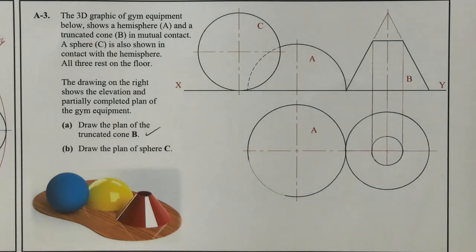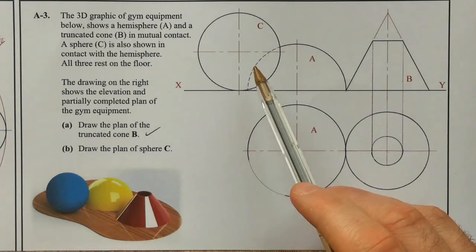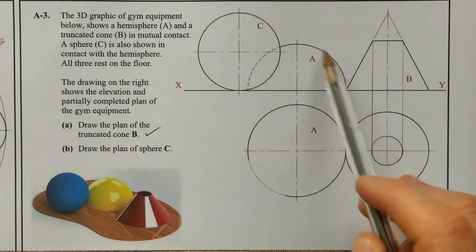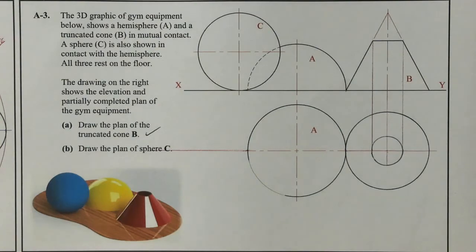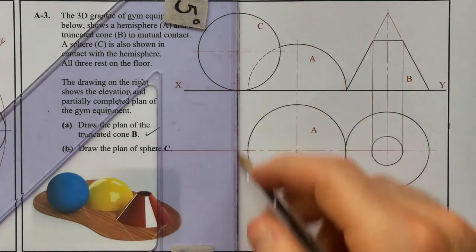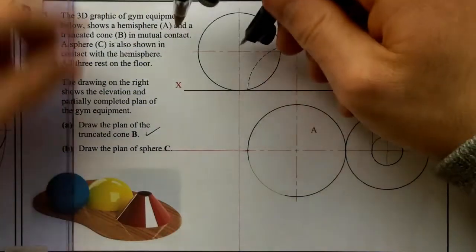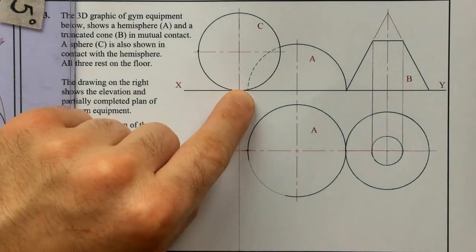Whenever you have a sphere in contact and it's in front in your elevation — slightly angled, not right on the edge — you have to locate sphere C at the position where it is touching on the extreme circumference of hemisphere A. I extend out the centre line and mark somewhere along there as the centre point of sphere C, then I need to find the exact position by taking the radius of sphere C.